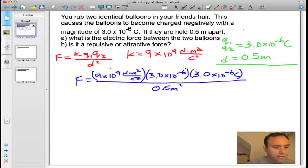When you go ahead and do the math, the force works out to be this number here. So you take 9 times 10 to the ninth, multiply it by 3.0 times 10 to the negative 6, times 3.0 times 10 to the negative 6, divide that by 0.5 squared, and this is what it works out to be, 0.32 newtons. Okay, that's part A.